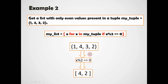The input tuple has 1, 4, 3, 2. With condition x % 2 == 0: for 1, 1 % 2 is not 0, so it is not included. For 4, 4 % 2 = 0, so 4 is included. For 3, 3 % 2 is not 0, so it is not included. For 2, 2 % 2 = 0, the condition is satisfied, so 2 is included. Finally the list has only even numbers from my_tuple. In this way we can use list comprehension for filtering.